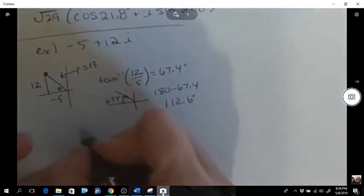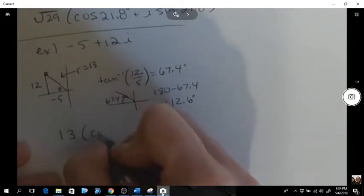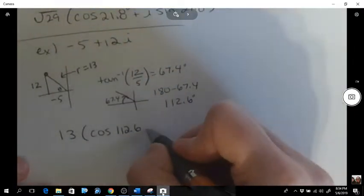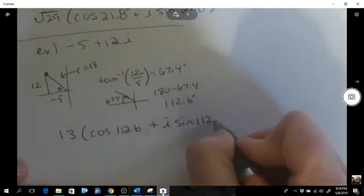So the final answer will look like this: 13 cos 112.6 plus i sine of 112.6.